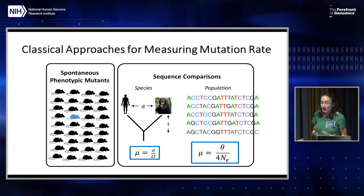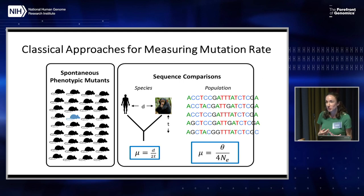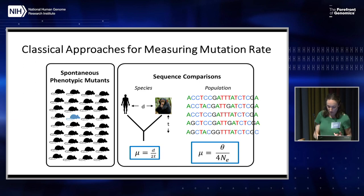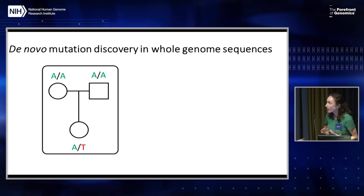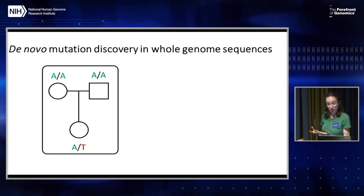Classically, to estimate mutation rates, we've relied on approaches like surveying the incidence of spontaneous phenotypic mutants within populations, or comparing sequences between two species that diverged at some known point in the past, or making inferences from levels of population diversity at a limited number of loci. But now, with democratization of whole genome sequencing, we have the ability to directly measure mutation rates by comparing parent and offspring genomes — comparative genomics on the timescale of a single generation.